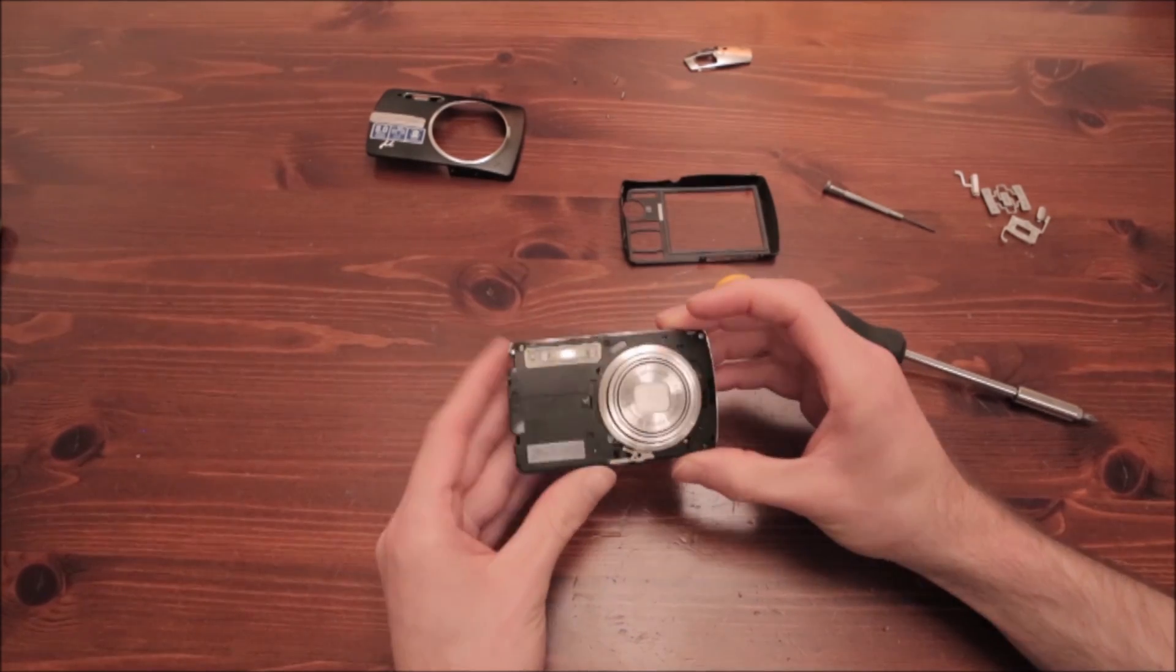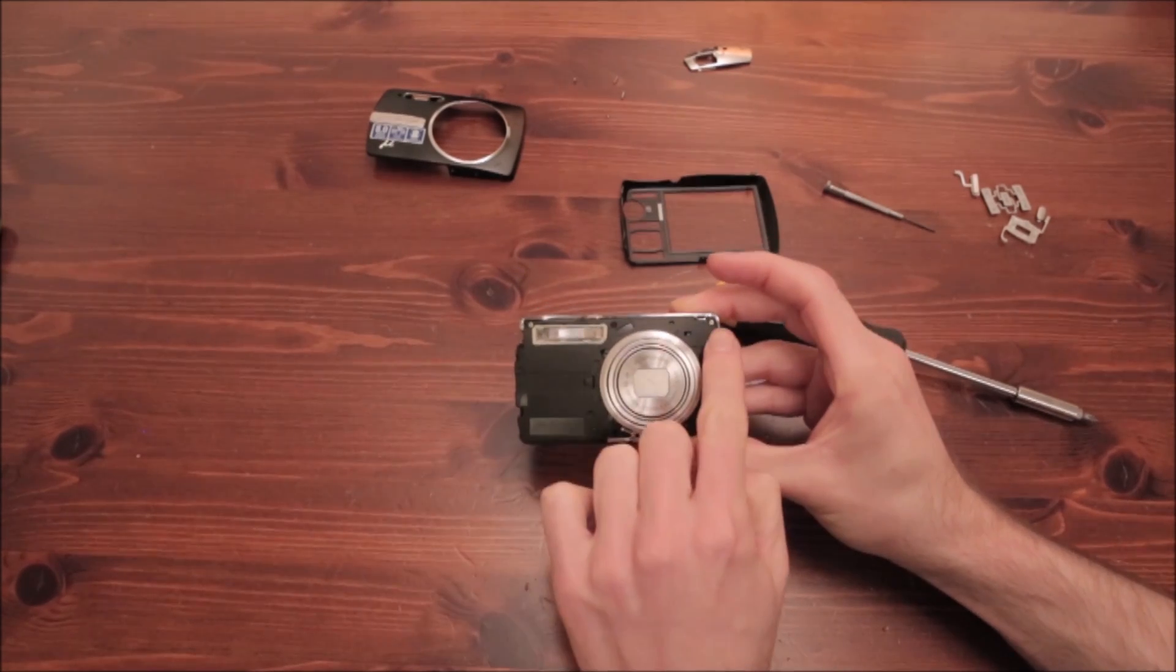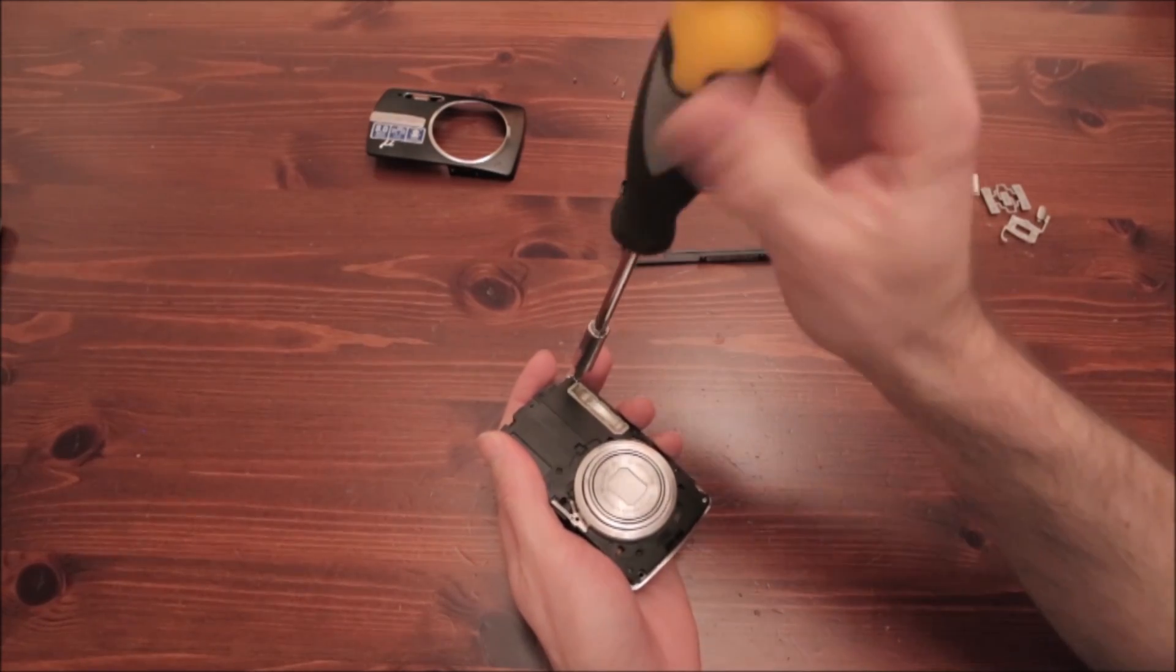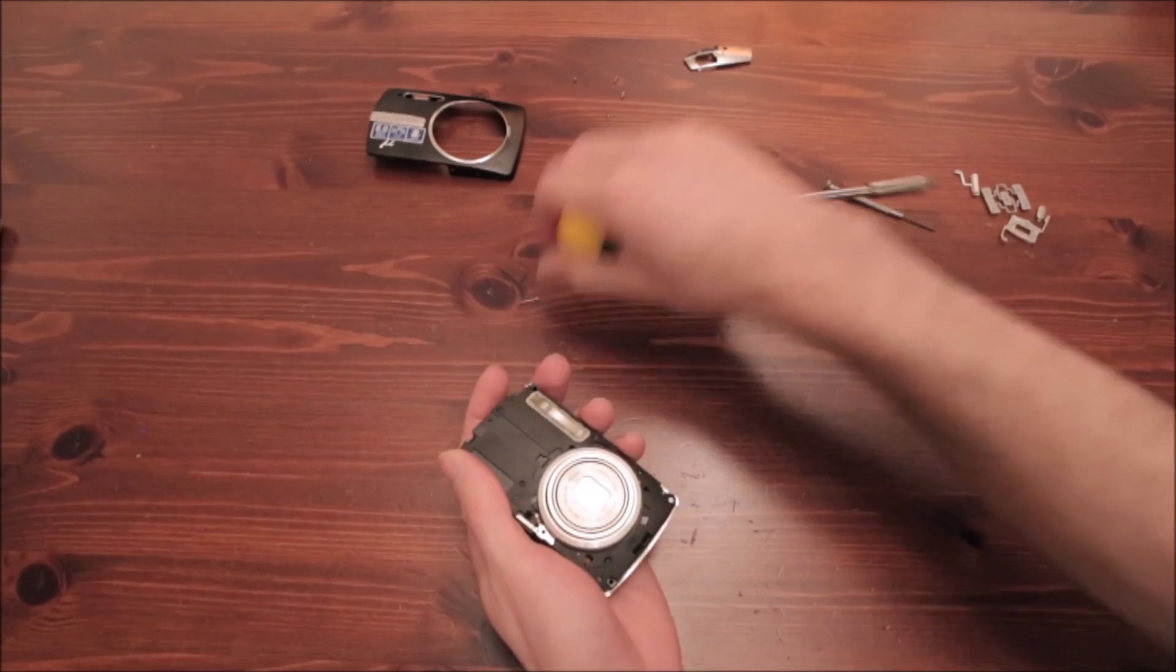Then we need to keep unscrewing. You see the front screws here that need to be removed. They keep both sides of the camera together and we need to remove them so we can open up the camera.